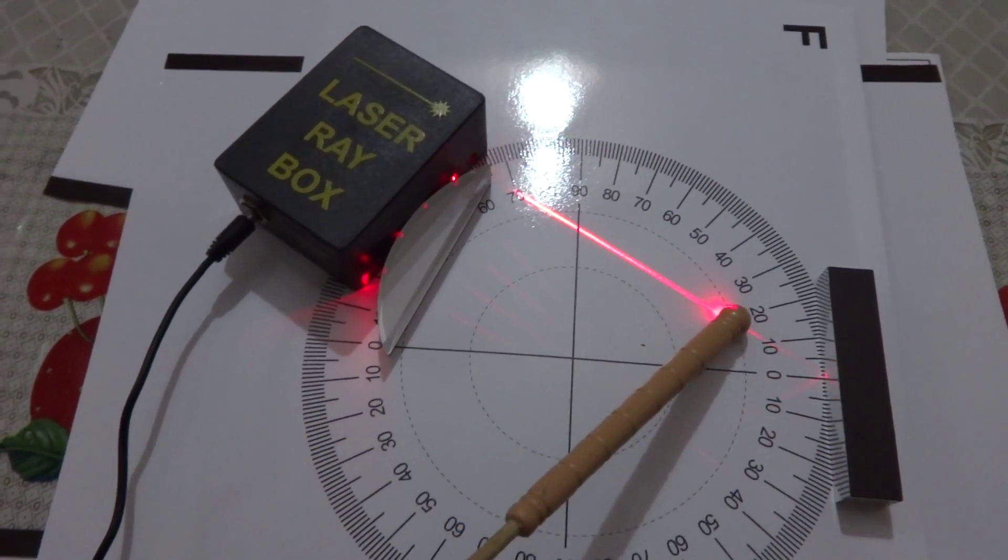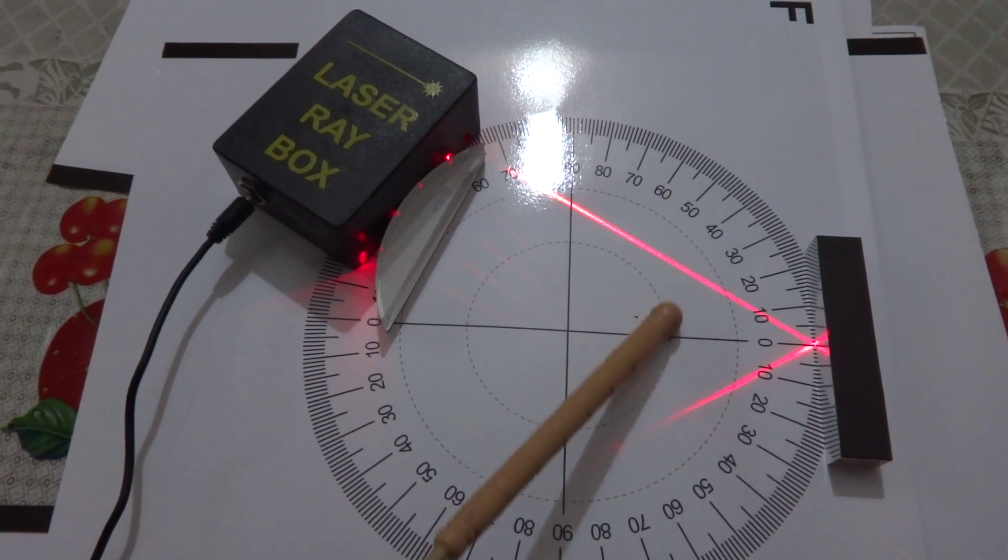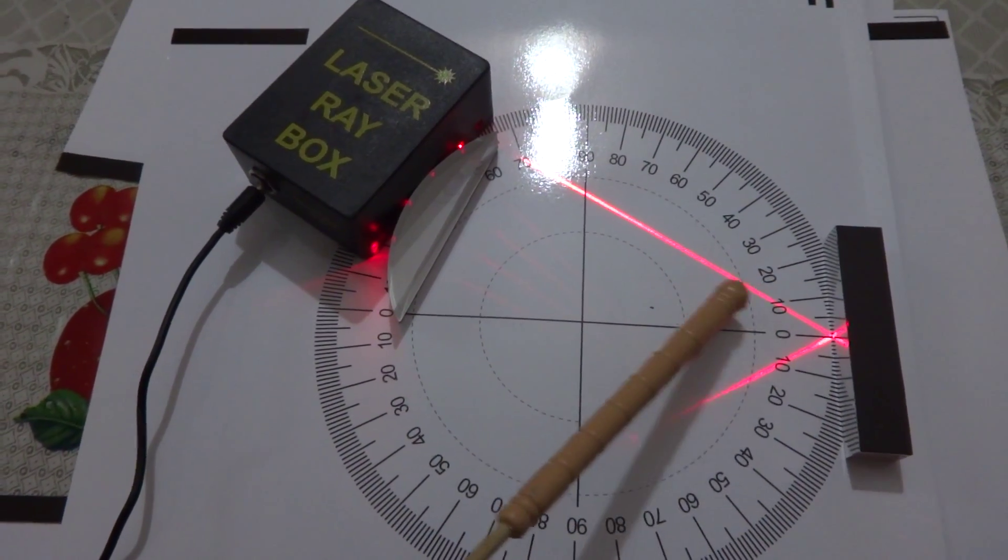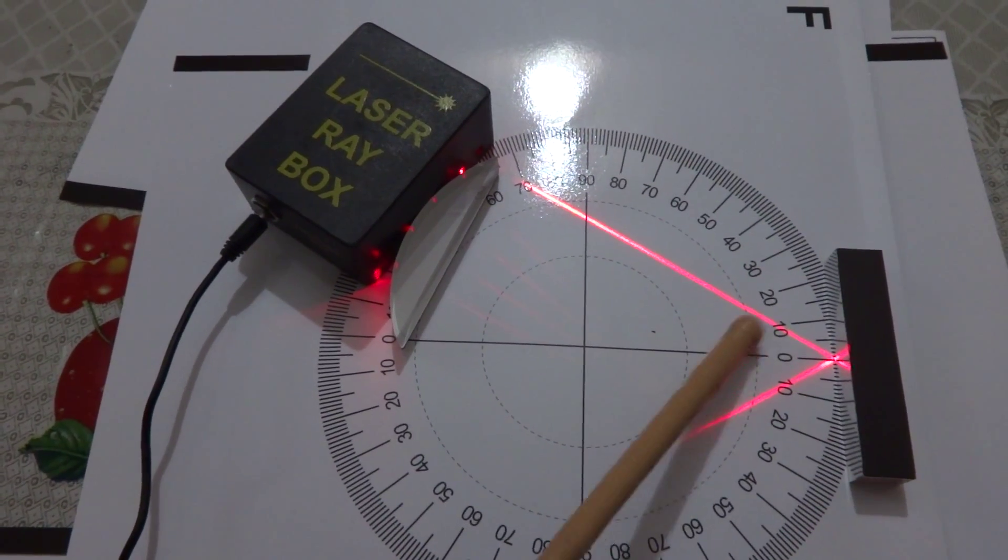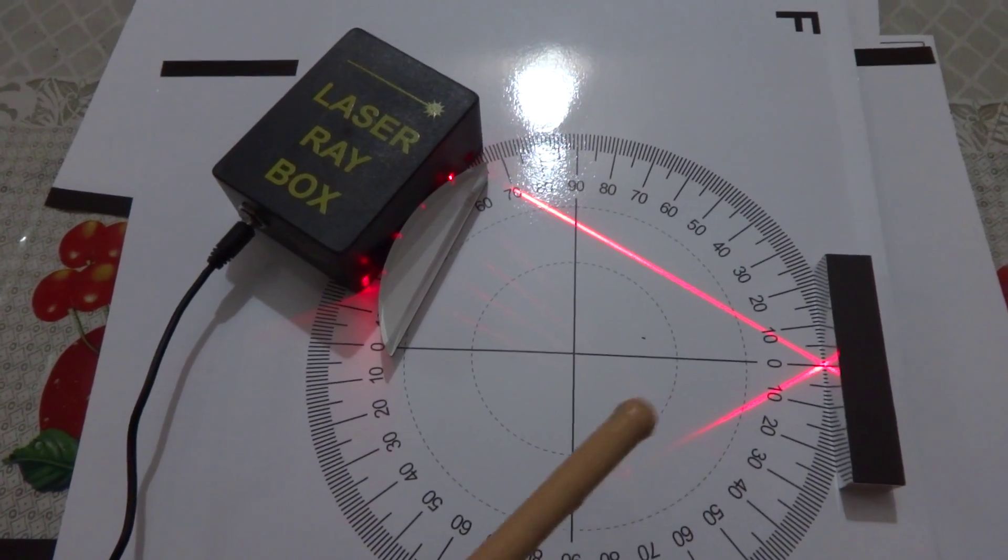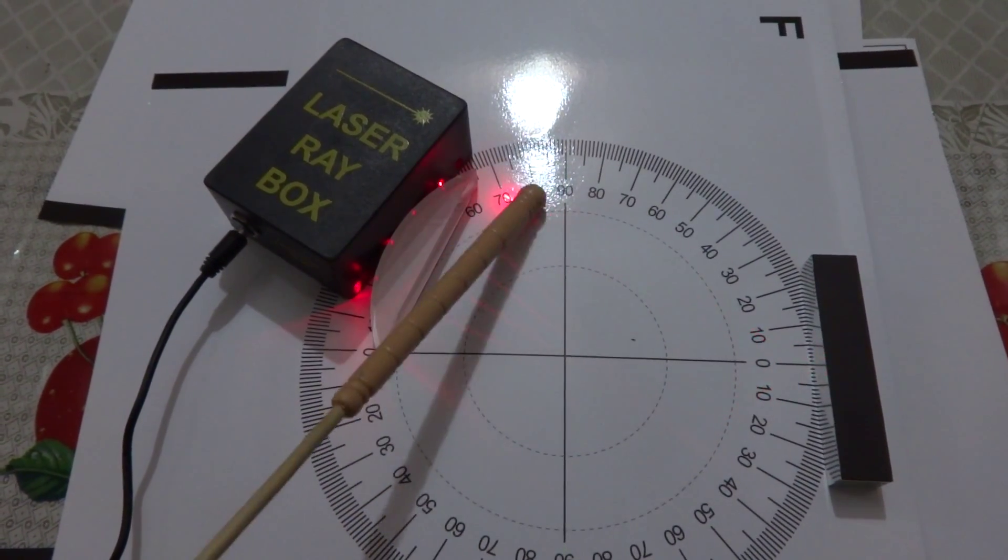The angle between the normal and incident ray is called angle of incidence. Here, I have adjusted it somewhere around 5 to 6 degrees. Now, if you observe this one,